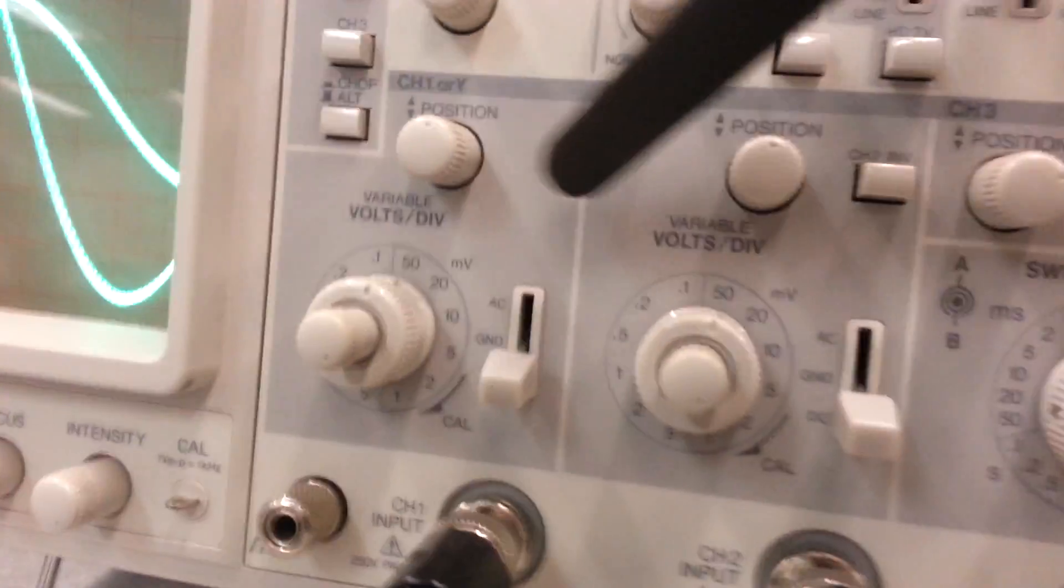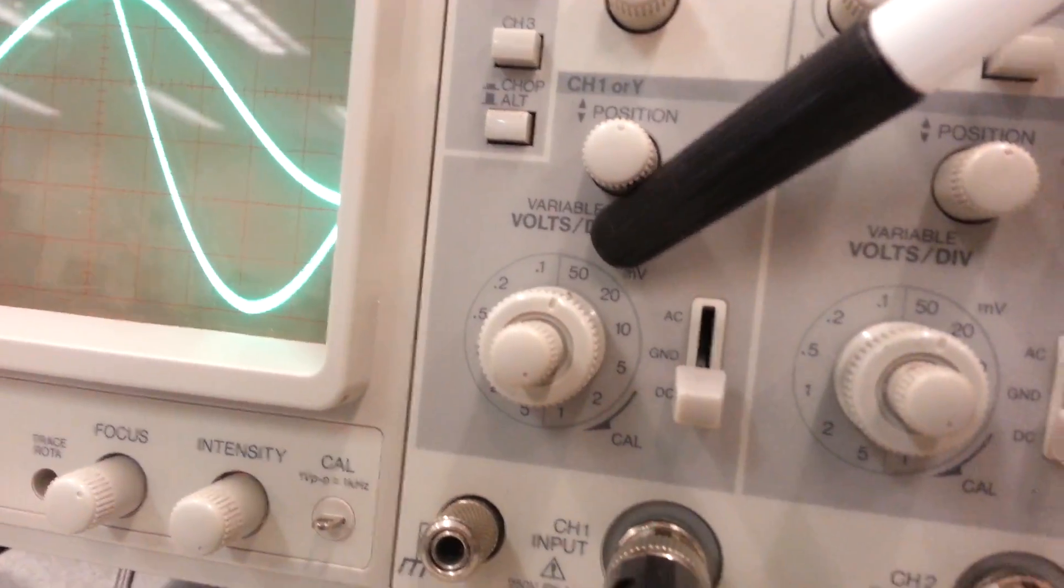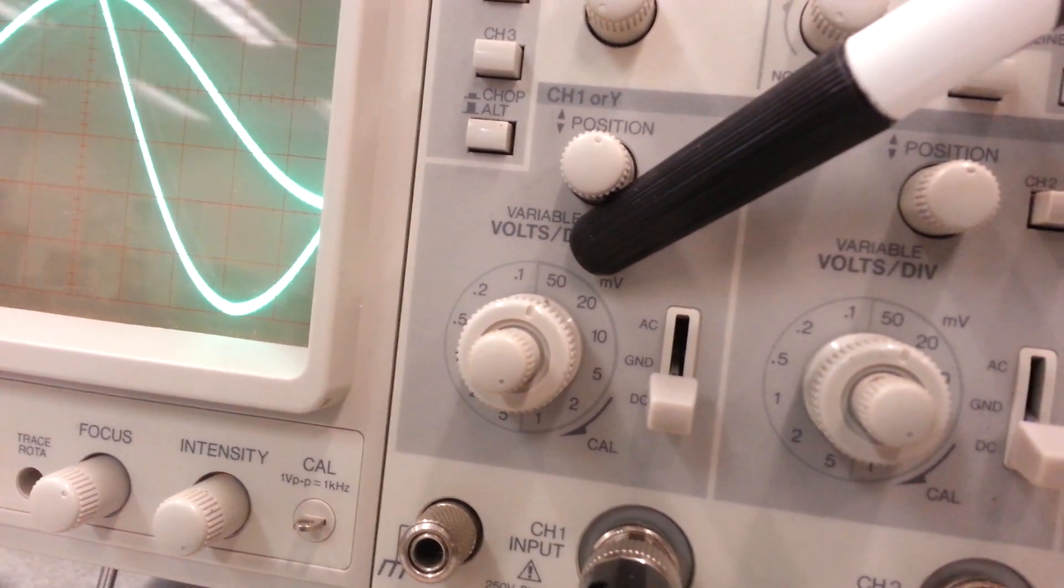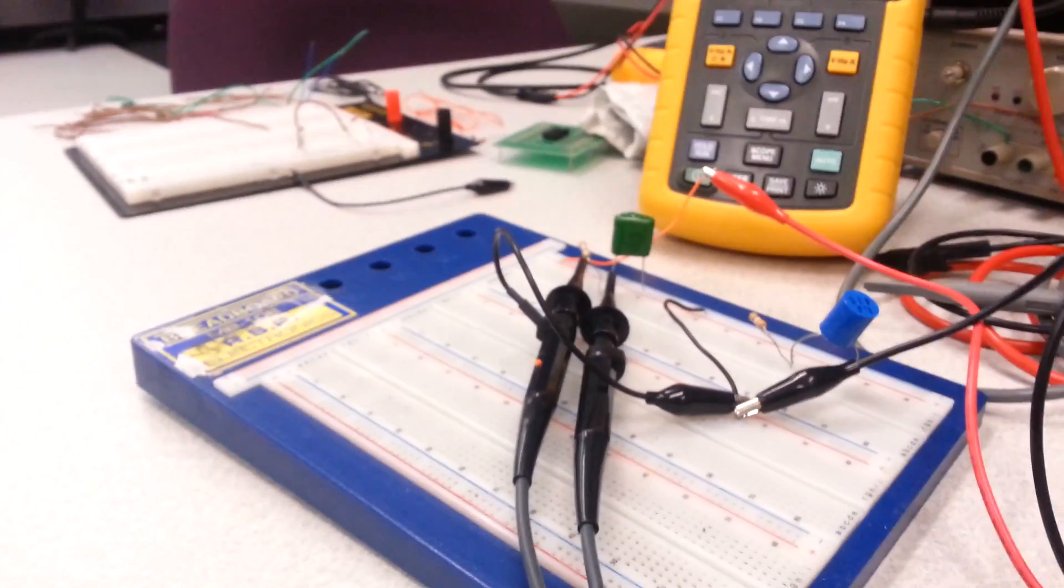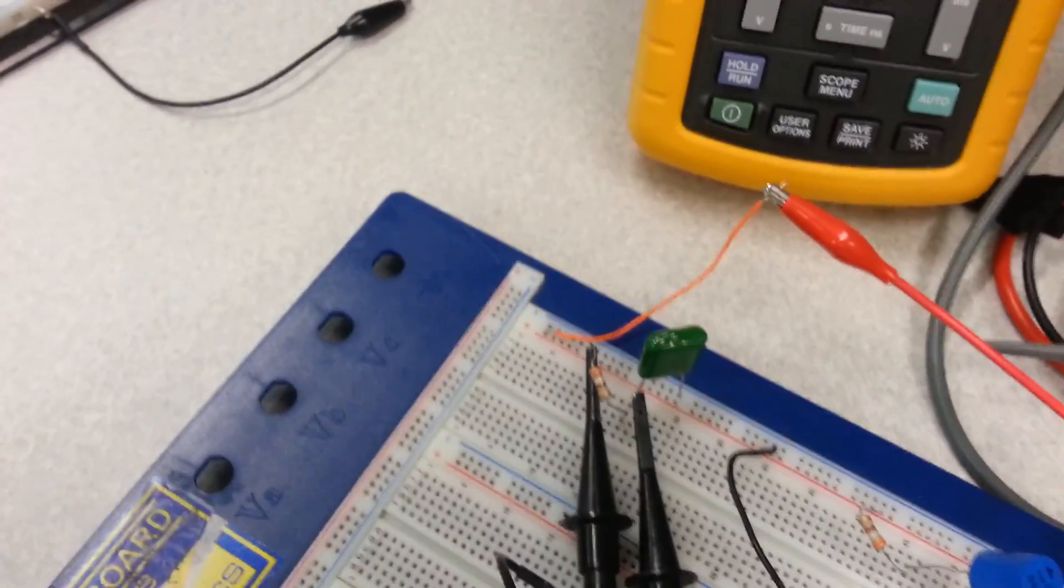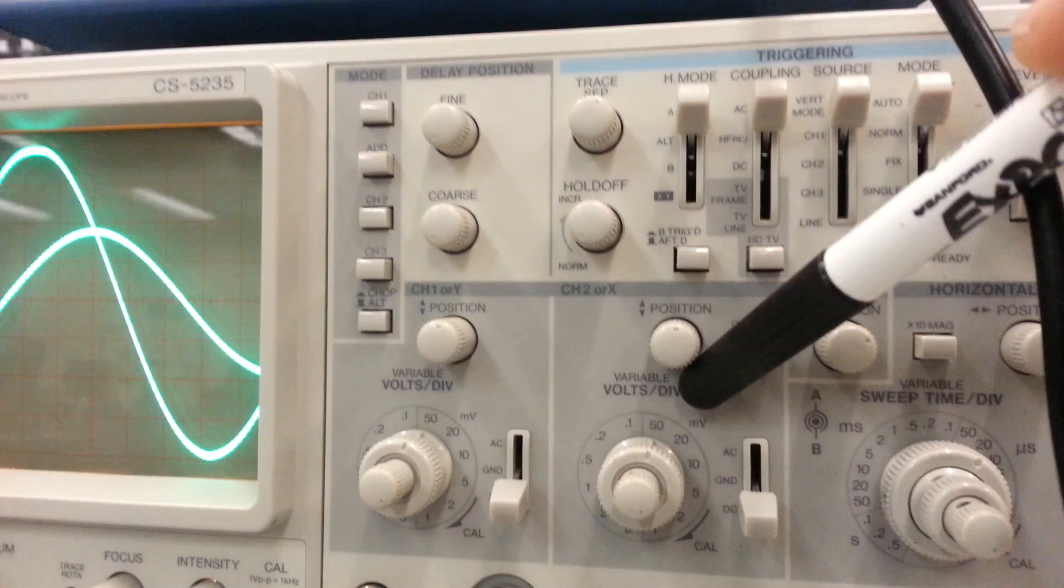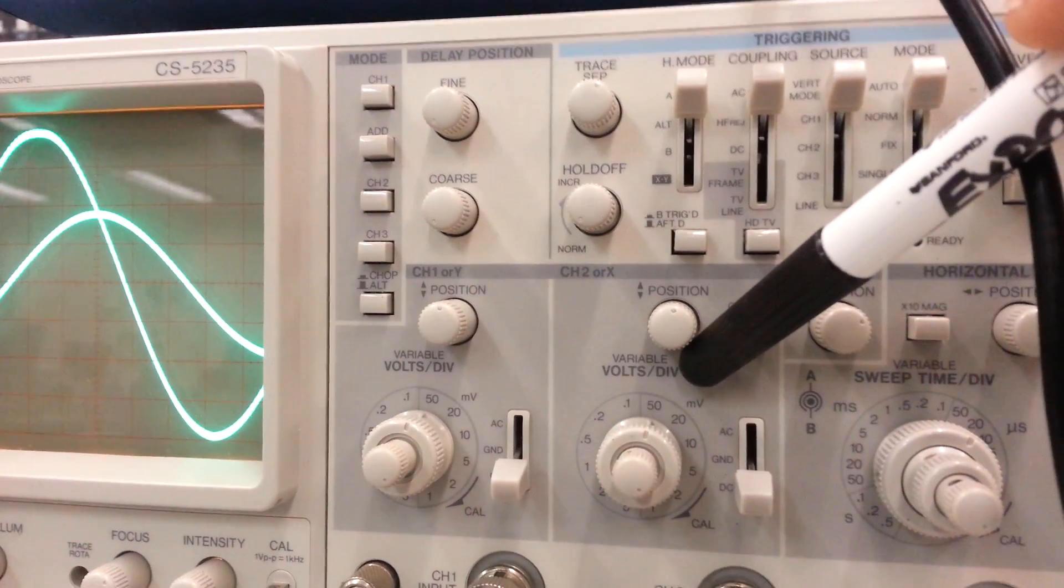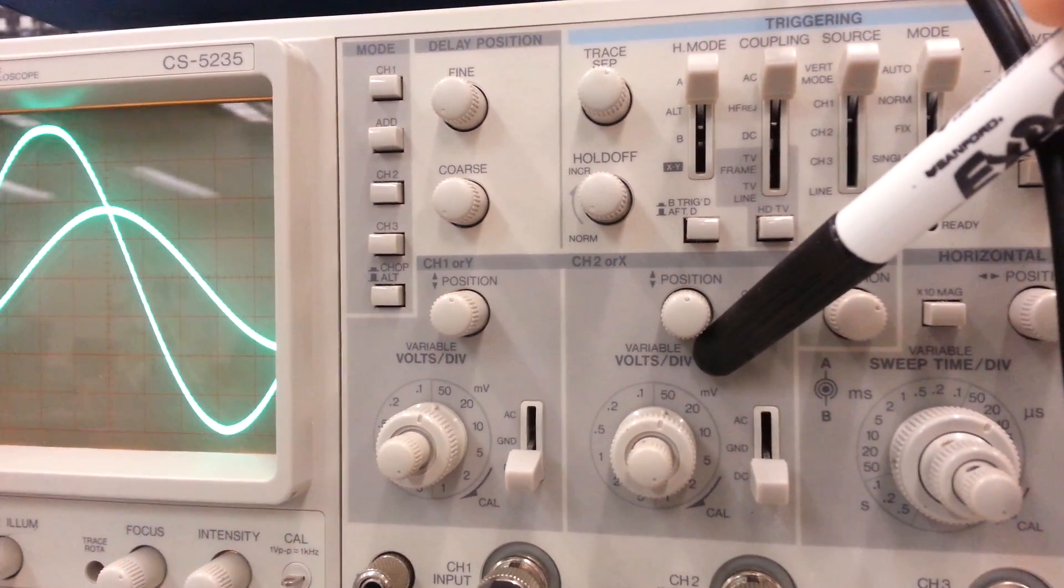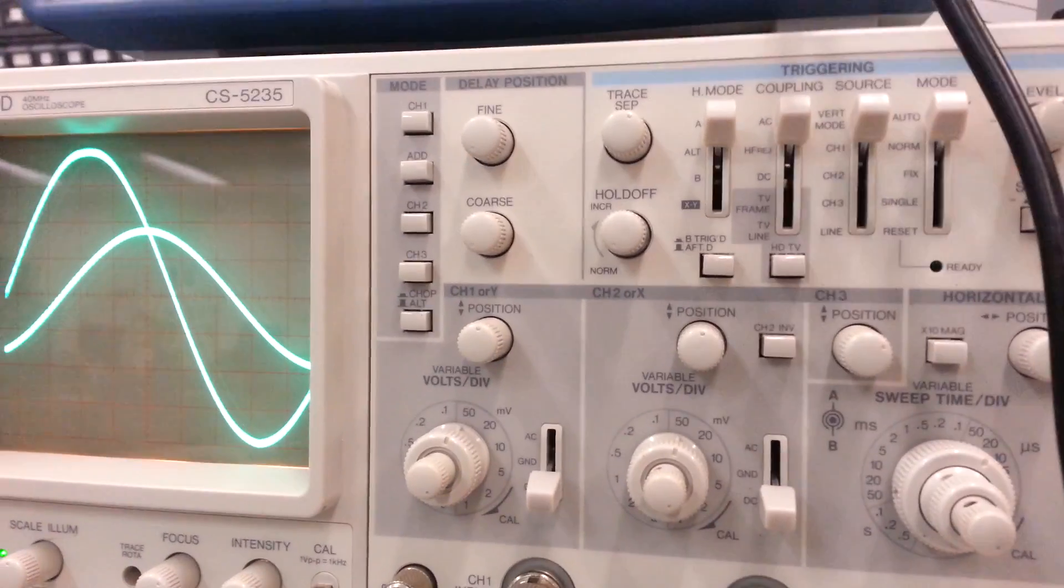So channel 1, the scope is set up right now. Channel 1 is at 50 millivolts per division with a times 10 probe. That's a half a volt per division. Channel 2 is also a half a volt per division with the times 10 probe.